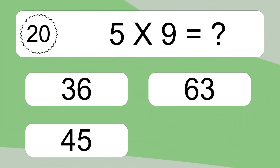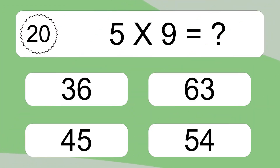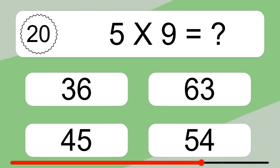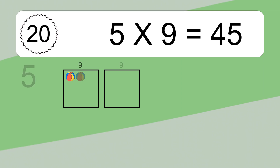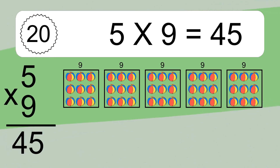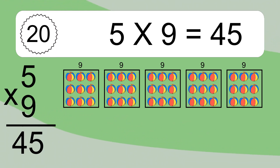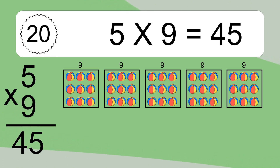5 times 9 equals what? 5 times 9 equals 45. We have 5 boxes, and each box has 9 colorful balls inside. If you count all the balls in all the boxes together, you will have 5 times 9 balls. This equals 45 balls.